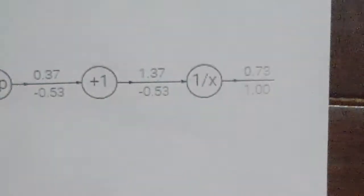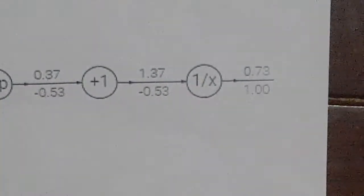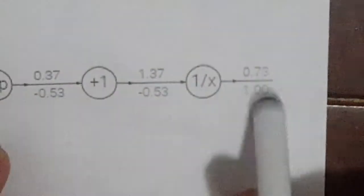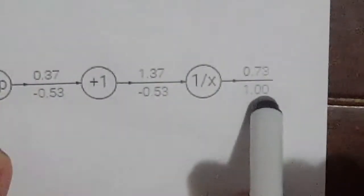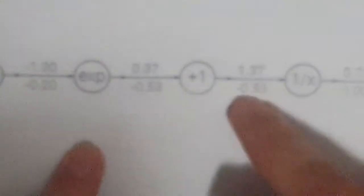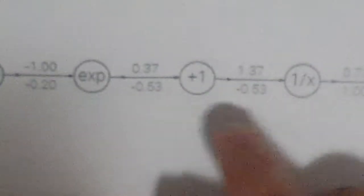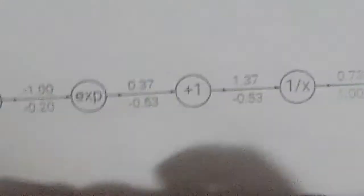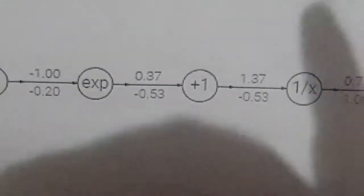Our final output is 0.73. Now we need to find the partial derivative of f with respect to f — we get 1. Easy enough, we move on.